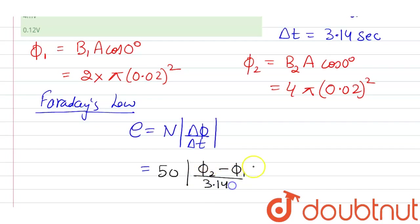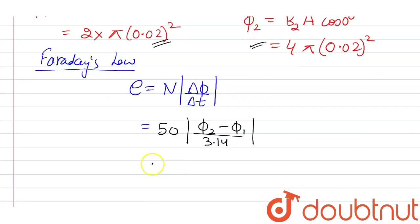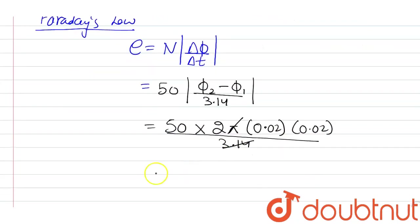Phi 2 we have already found and phi 1 we also found, so we subtract them. So we will get 50 into 2 pi 0.02 into 0.02 divided by 3.14. This will cancel out, so here we get...